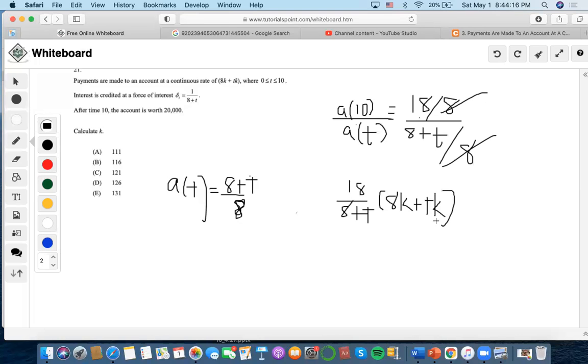We're going to have to put the continuous rate with it. We also will have to take out the k, so you're only left with 8+t. Then we could also cross that 8+t here, and we're left with another integral from 0 to 10, because at time 10 the account is finally worth 20,000.